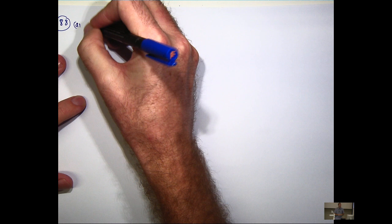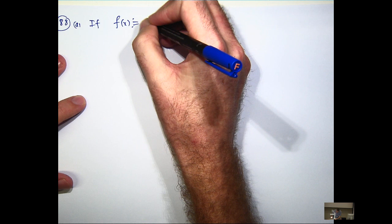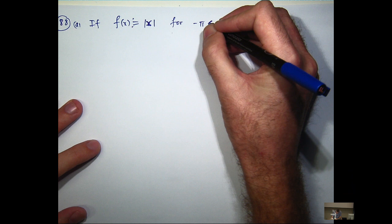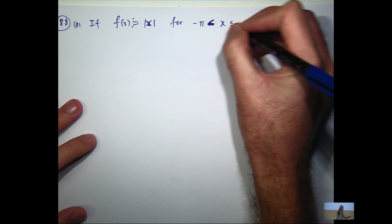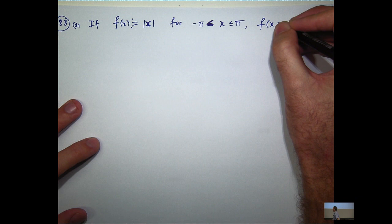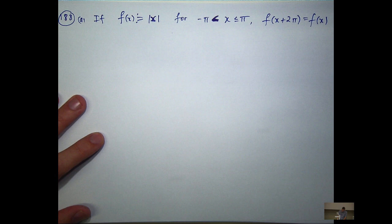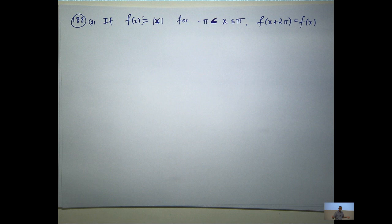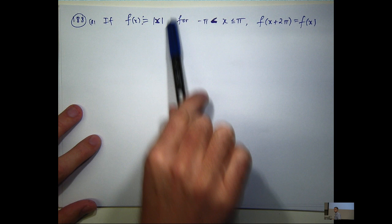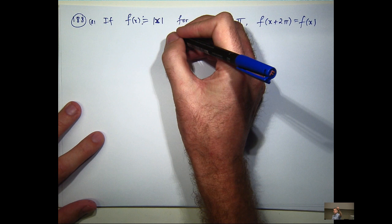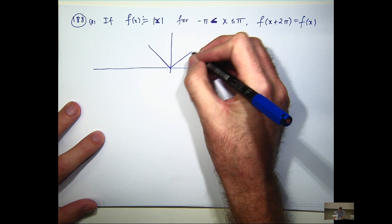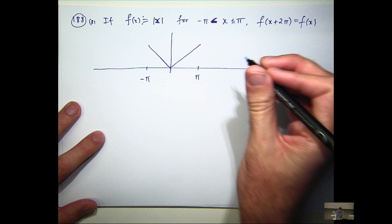Let's look at a basic example. We've got a function defined as the absolute value of x on the following interval. So what we want to do is calculate the Fourier series of our function. I'd like to first draw a sketch of the graph of my function. What I'm going to do is draw the graph on this interval and then use the periodicity. The absolute value function looks like this.